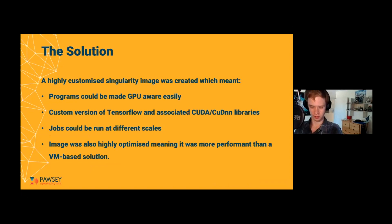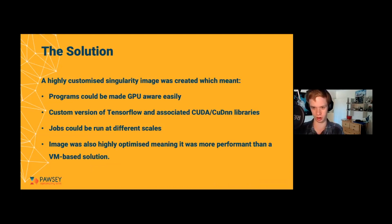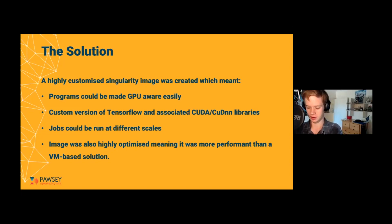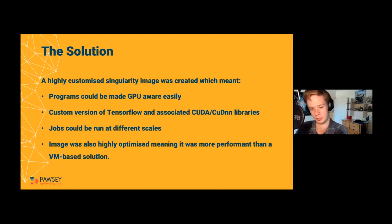The only solution to scale things up was putting everything — all the custom libraries and even the NVIDIA drivers in some cases — into a container and spinning up many hundreds of them to actually run my workflow. I created a highly customized Singularity container at Pawsey, and the big advantage was I could make my programs easily GPU-aware. I had those custom versions of the libraries and could run jobs at many different scales, spawning up as many or as few containers as I wanted. I was also able to highly customize the container image to be a lot smaller than a standard container because I put exactly what I needed in it — and even compared to a type-one hypervisor, it was still a much more performant solution.